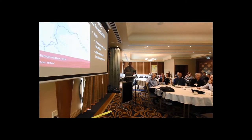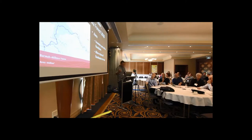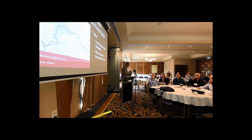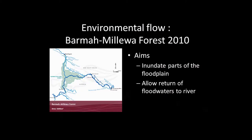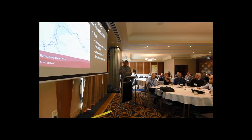In June–July 2010, the Murray-Darling Basin Authority decided they were going to put a winter flood through Barmah Forest. It had two aims. The first aim was to actually inundate the floodplain. The second was to allow some of that floodwater to return to the river. And that's where we came in.